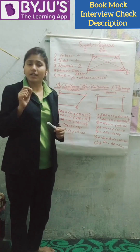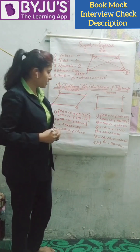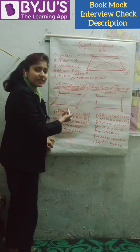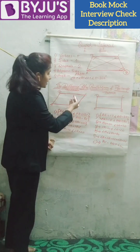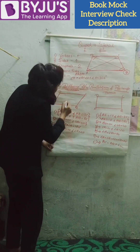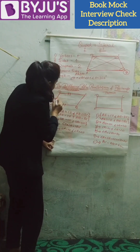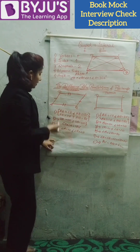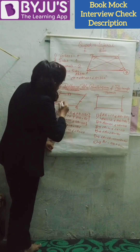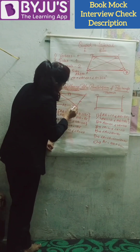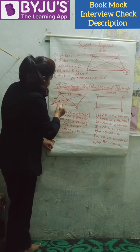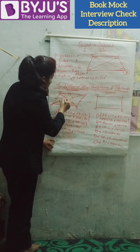A parallelogram has some properties. First, opposite sides are parallel as well as equal. So AB is parallel to CD, and AD is parallel to BC. Second property is that diagonals bisect each other at point O. That means OA equals OC, and OB equals OD.